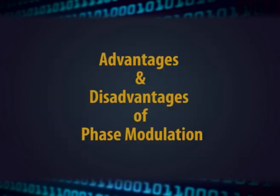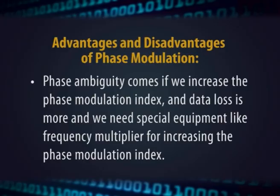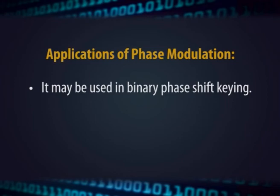Advantages and disadvantages of phase modulation: the main advantage is that PM has less interference from static, which is why it is used in finding the speed or velocity of a moving object — something frequency modulation cannot do. The main disadvantage is that phase ambiguity occurs when the phase modulation index is increased, leading to data loss, and special equipment such as frequency multipliers may be required. PM applications are similar to FM and it is also used in binary phase shift keying in communication systems.